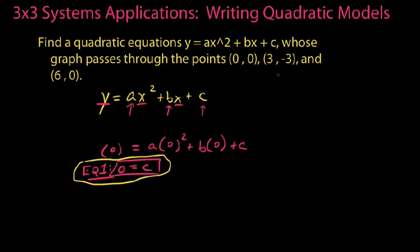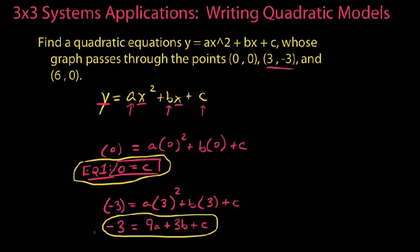Next, for the point (3, -3), we plug in -3 for y and 3 for x: -3 = a(3)² + b(3) + c. This gives us our second equation: -3 = 9a + 3b + c, which we'll call equation 2.